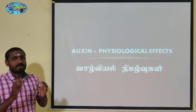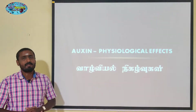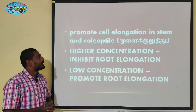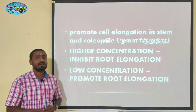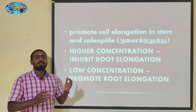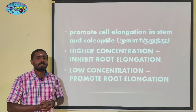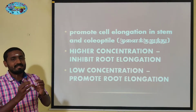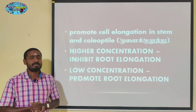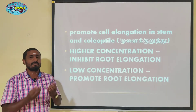Auxin has a function in a plant. This is a function of a plant. We will talk about cell elongation — cell elongation is one function. It is involved in multiple cell division. The cell is solid and rectangular. It is a little light.